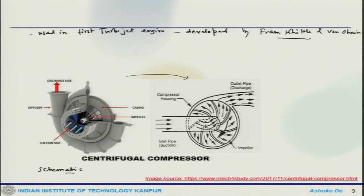That was the first turbojet introduced, and the compressor used there was a centrifugal compressor. You can look at different books or images across the internet to find different schematics or pictures of this, which will give you an idea of how a centrifugal compressor looks.